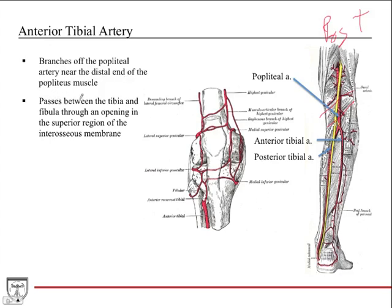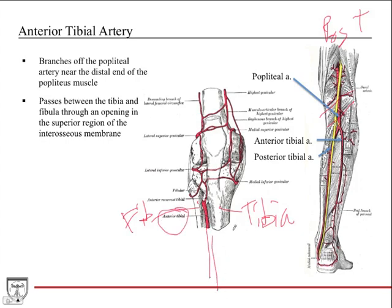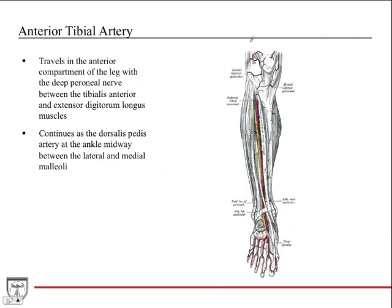The anterior tibial artery branches off the popliteal artery near the distal end of the popliteus. The bifurcation happens on the posterior aspect, almost in the posterior compartment of the leg. So the anterior tibial has to get to the anterior compartment, and it passes between the tibia and fibula through an opening in the superior region of the interosseous membrane.